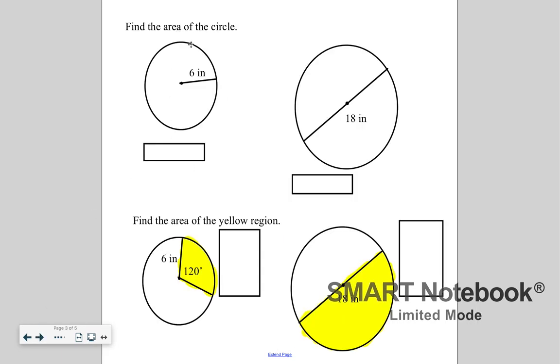So in the top two, we're finding the area of the whole circle. The 6 here is representing the radius. The 18 is representing the diameter. Down here, you're going to find the area of the sector. So only the yellow part. I know this is probably difficult to see, but you should be able to see it in your notes that this is 18. It's pretty much the same circles, but now I shaded part of it.